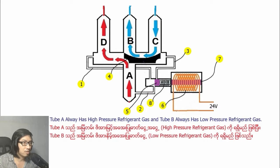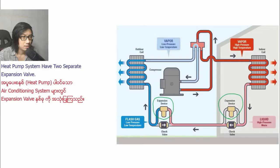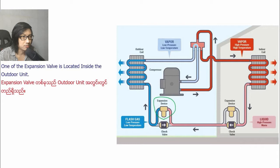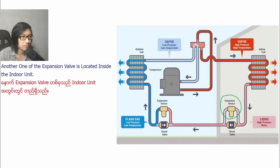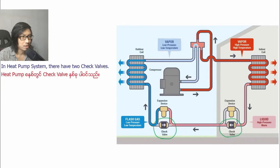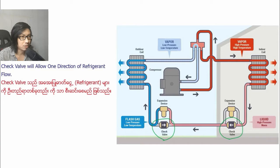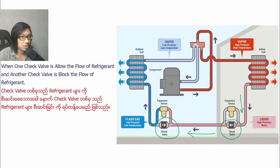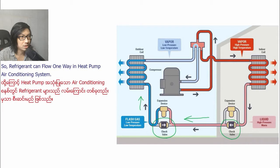Port A always has high-pressure refrigerant gas. Port B always has low-pressure refrigerant gas. Heat pump systems have two separate expansion valves — one located inside the outdoor unit and one inside the indoor unit. In a heat pump system, they also have two check valves. One check valve allows refrigerant flow in one direction while the other check valve blocks the flow, so refrigerant can only flow one way.